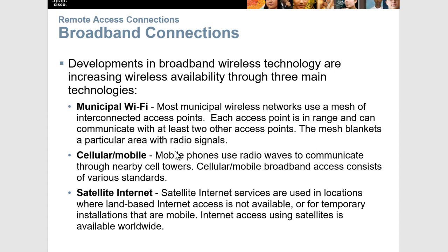Cellular mobile phones use radio waves to communicate through nearby cell towers. It consists of various standards — we went from 3G to 4G LTE, and 5G is coming out very soon. Satellite internet may be the only option where other solutions are not viable. It's not the most desirable — it's affected by weather and multiple types of interference — so it's kind of a last resort to get internet access.